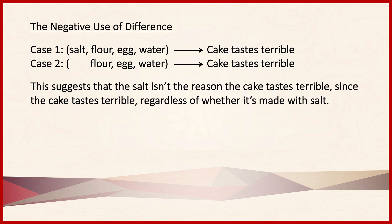The method of difference also has a negative use. In this fairly simple example, we have two cases. In case one, salt, flour, egg, and water are being used to make a cake, and the cake tastes terrible. In case two, flour, egg, and water are being used, and the cake still tastes terrible. Because the independent variable that we're testing — that is, salt — is present in case one but not in case two, this is the method of difference. However, because there's no change in the effect, that means we're using the method negatively to show that the presence of salt is not necessary to cause the cake to taste terrible.